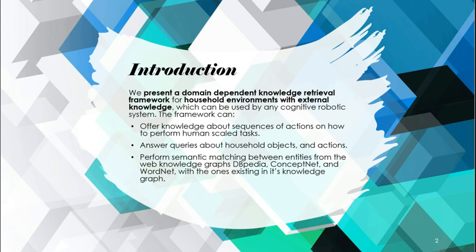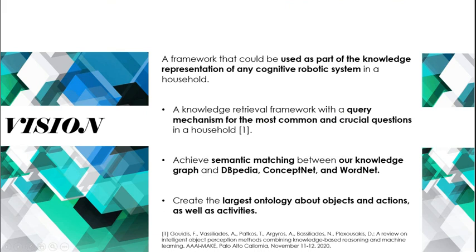Our vision was to create a knowledge representation that could be used by any cognitive robotic system as a primary or secondary form of knowledge representation. On top of that, we aimed to create a query mechanism that would automatically answer the most common and crucial questions addressed to cognitive robotic systems in a household environment. Those questions were the result of an extensive survey we conducted on the topic of household robotics.